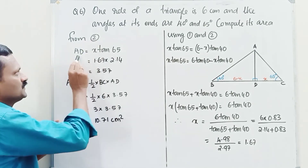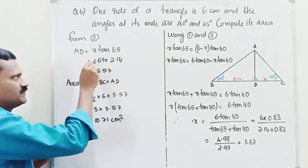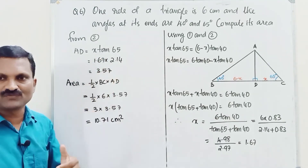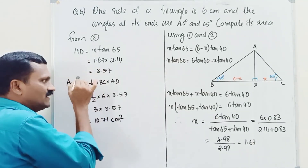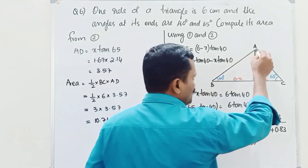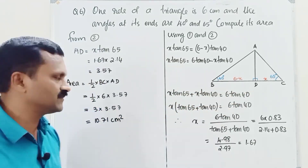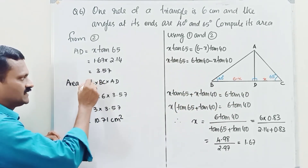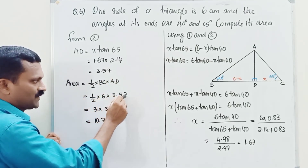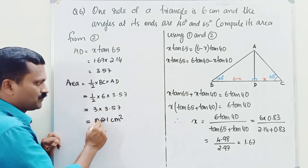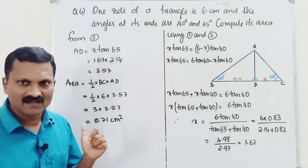AD equals x·tan 65. Substituting the value of x, it becomes 1.67 into 2.14, giving AD equals 3.57. Then we can find the area. AD is the altitude from vertex A to opposite side BC, and BC equals 6 centimetres. So the area of the triangle is half into BC into AD, that is half into 6 into 3.57, which gives 3 into 3.57 equals 10.71 centimetres squared.